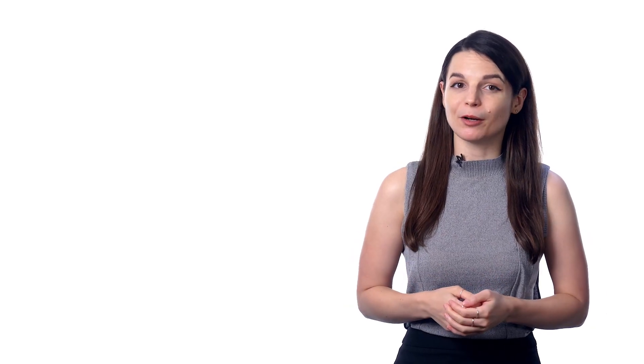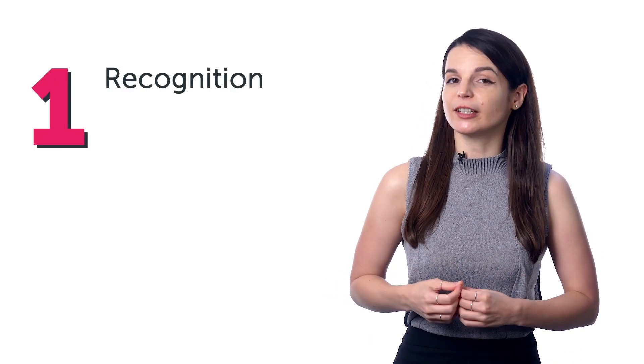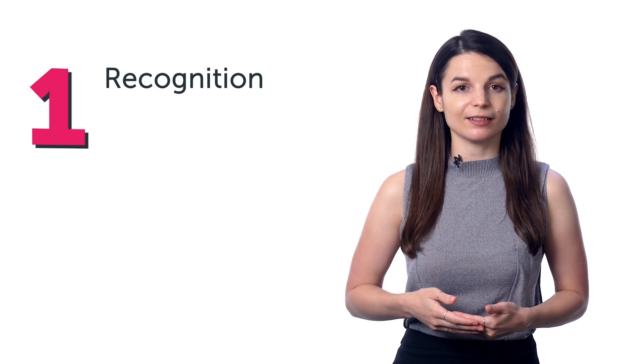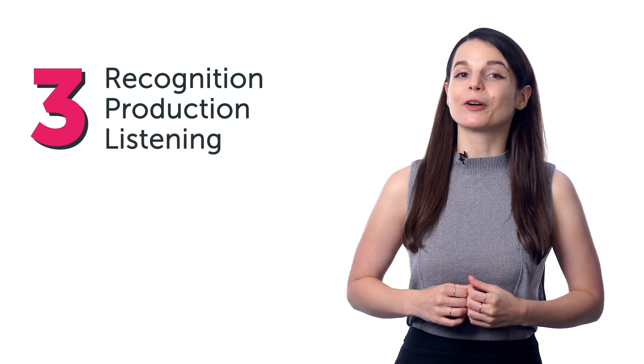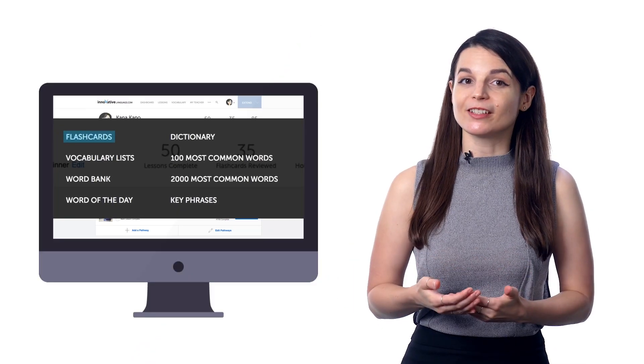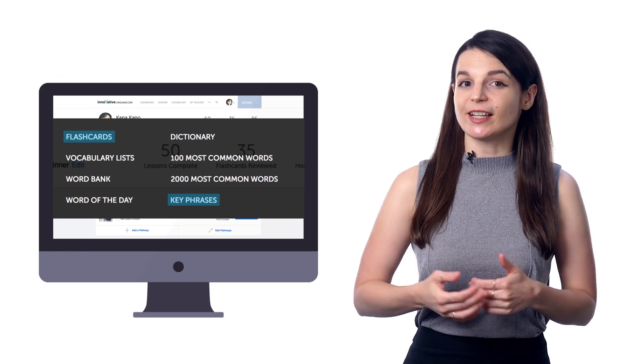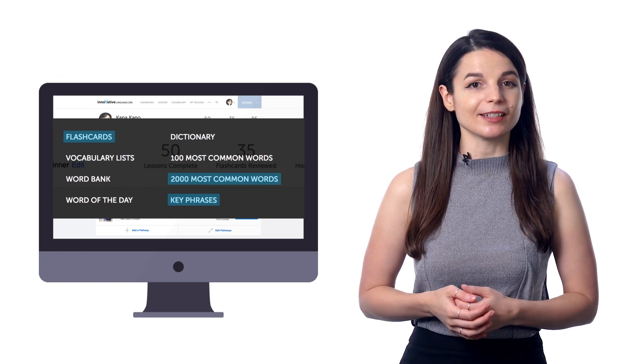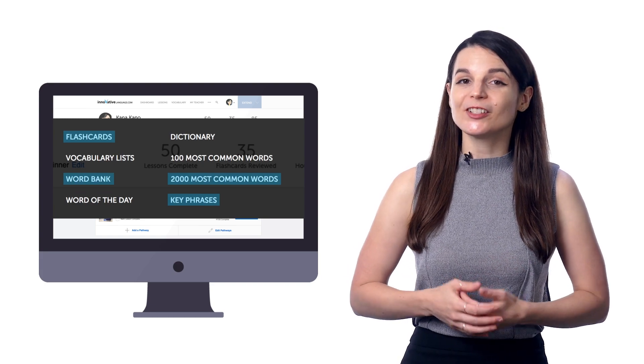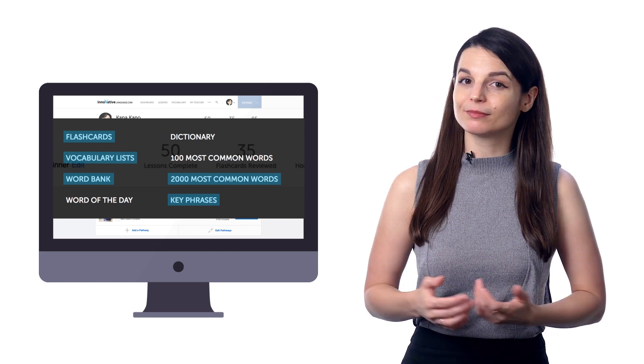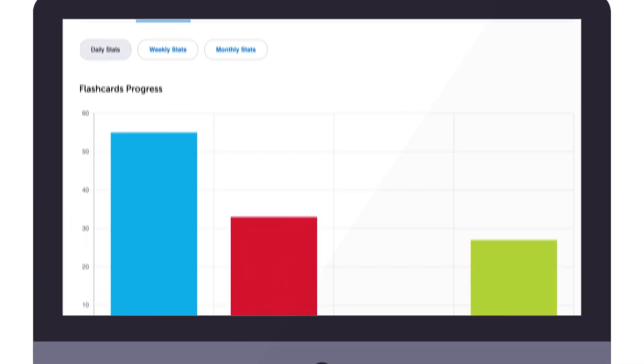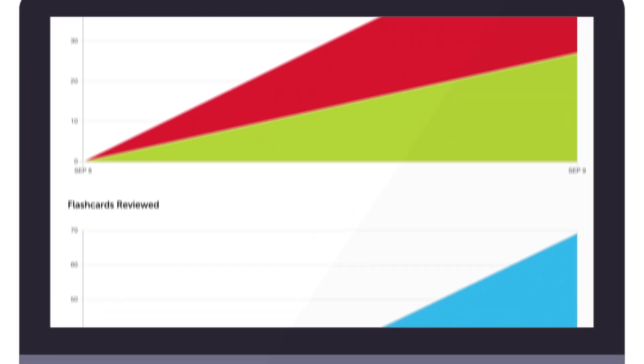Then, move on to the next card in the deck until you're done with the session. You can study with three modes: Recognition, get the word in the target language and see if you know the meaning. Production, get the meaning and see if you know it in the target language. Or, listening: hear the word or phrase and see if you know the meaning. Choose one, two, or all three modes of learning. You can create flashcard decks from key phrases presented in lessons, the 2000 core word list, words saved in your word bank, and our free vocab lists. Want to see how many words and phrases you've mastered? Visit my stats for your daily, weekly, and monthly progress breakdown to see your personal study stats.